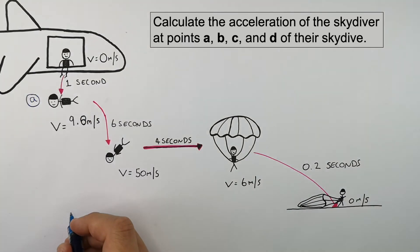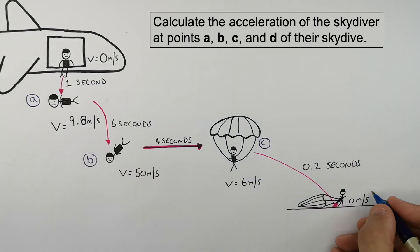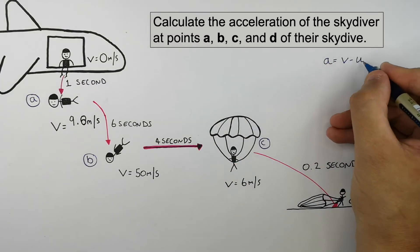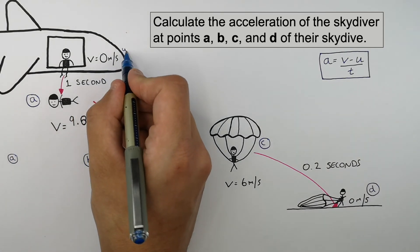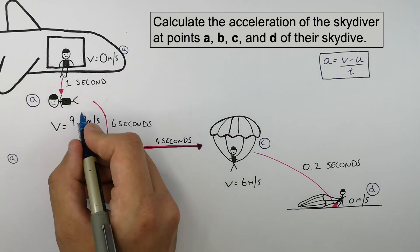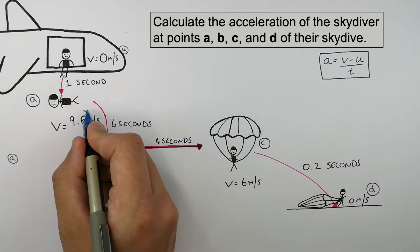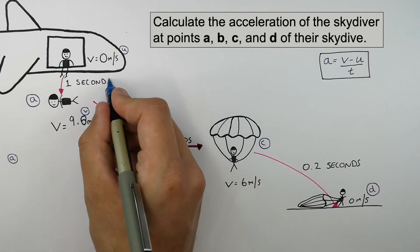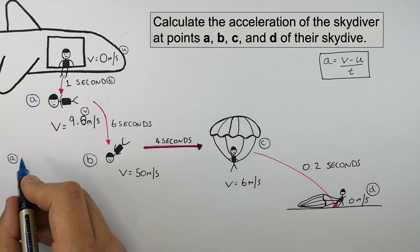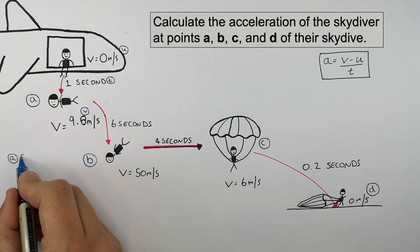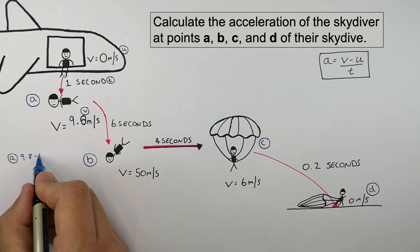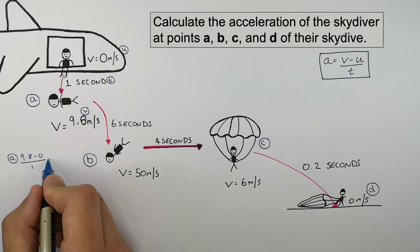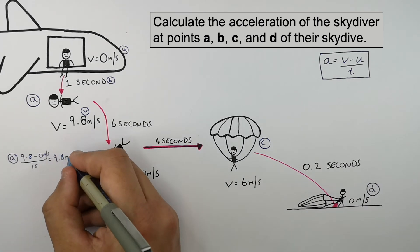You needed to calculate the acceleration of the skydiver at points A, B, C, and D of their skydive. To calculate the acceleration, recall A equals V minus U over T. At point A, they're sitting on the plane with an initial velocity of 0 meters per second, increasing to a final velocity of 9.8 meters per second in one second. So acceleration equals 9.8 minus 0, divided by 1, giving 9.8 meters per second squared.